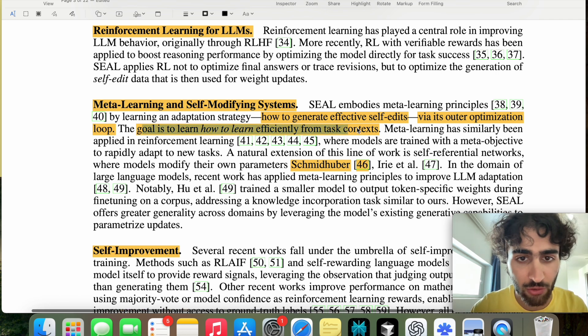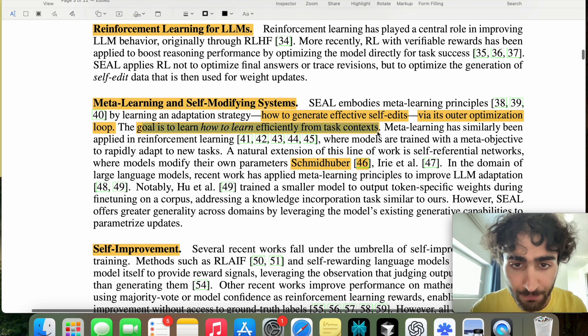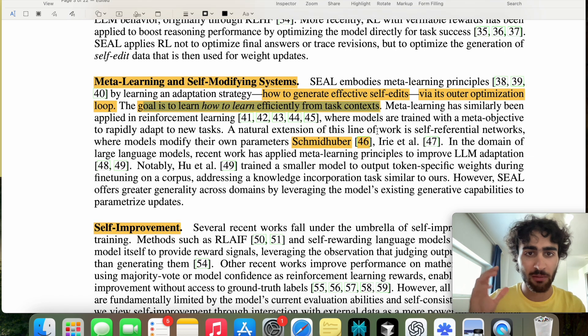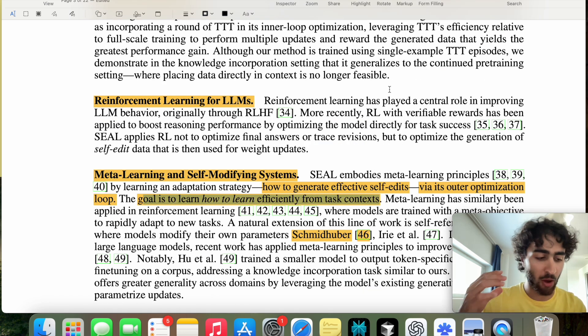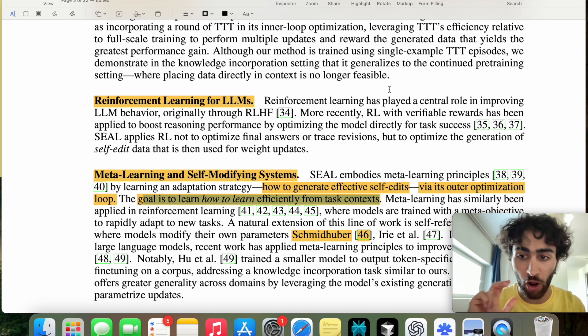Which is what this line says. The goal is to learn how to learn efficiently from task context. So given our quiz, what's the best way to extract a self-edit, which tells the model how to optimize its weights to perform good on this context, and then improve our policy through that.